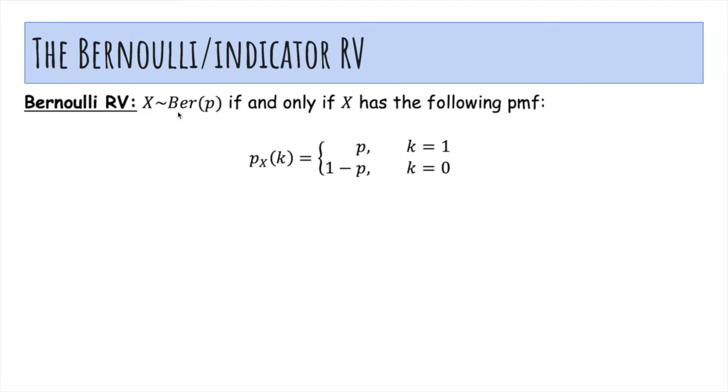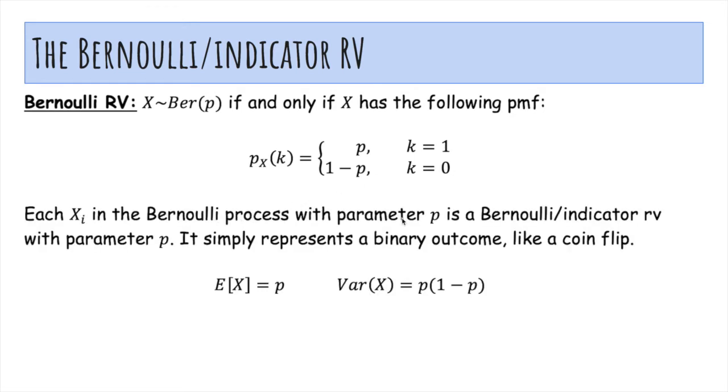We'll say X is Bernoulli with parameter p if and only if it has the probability mass function, where it's 1 with probability p and 0 with probability 1 minus p. Each Xᵢ in the Bernoulli process with parameter p is a single Bernoulli or indicator random variable with parameter p. It simply represents a binary outcome like a coin flip, and here are the mean and variance we derived earlier.